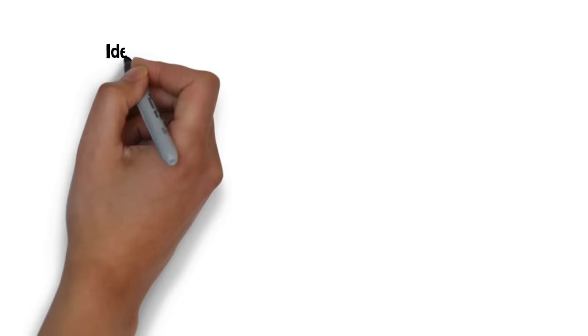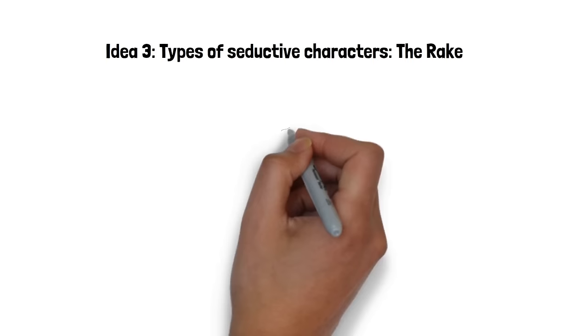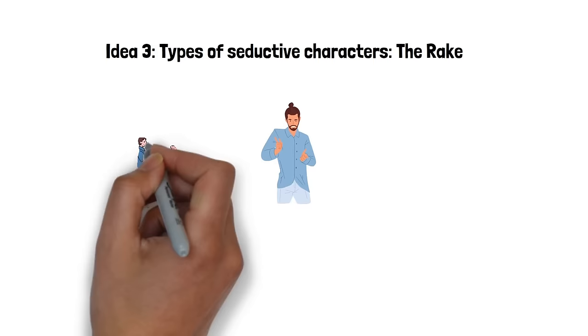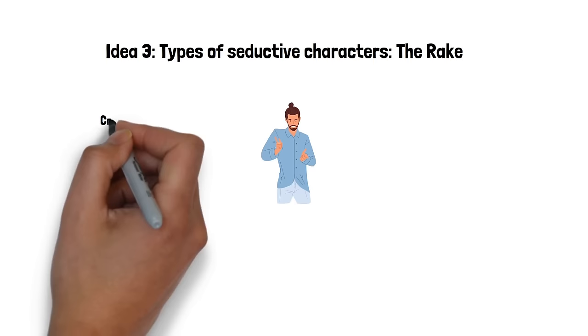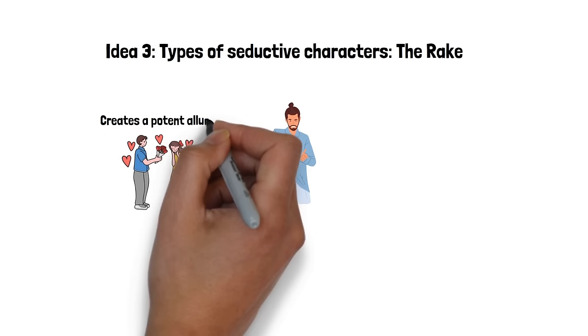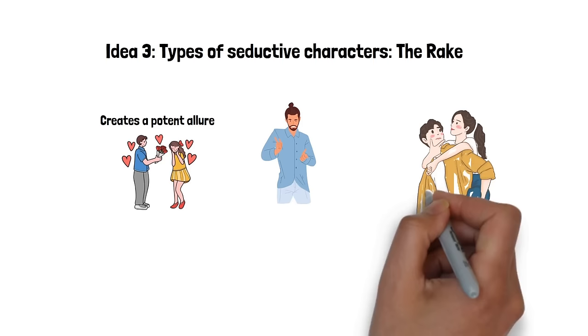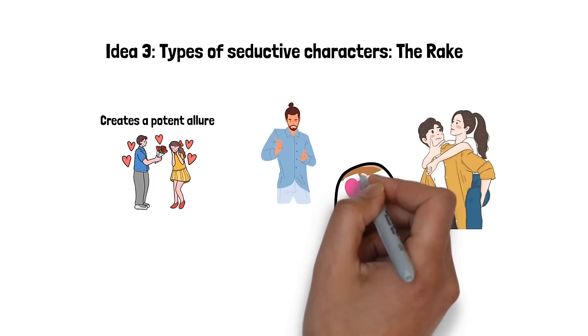Idea 3. Types of seductive characters. The rake. The rake is typically a man who is passionate, all consumed by a desire that he freely expresses, making those he targets feel uniquely wanted. He can't help but be attracted to beauty, and his charm lies in his unabashed lust for life and love. Rakes are often known for their ability to make someone feel as though they're the center of their world, an object of intense, undivided attention. This intensity, mixed with a hint of danger due to his reputation, creates a potent allure. Despite his possibly fleeting attention, the allure of a rake is in the whirlwind of passion and the feeling of being profoundly desired.